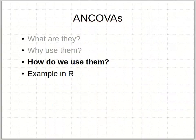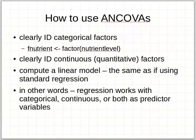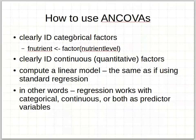So how do we use one? It's really pretty simple. You have to clearly identify which terms are your categorical factors. We've already played with this a little bit in the labs — if you have a quantitative number, say nutrient doses coded as 0, 1, 2, and 3, you would need to identify that as a factor to make sure R treats it as a categorical factor. So you might call it F-nutrient just to be clear.